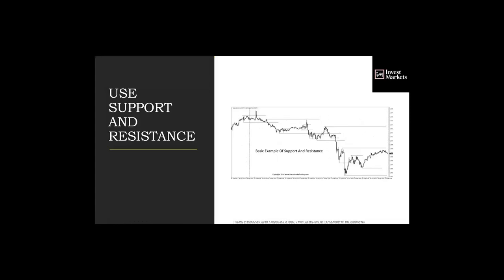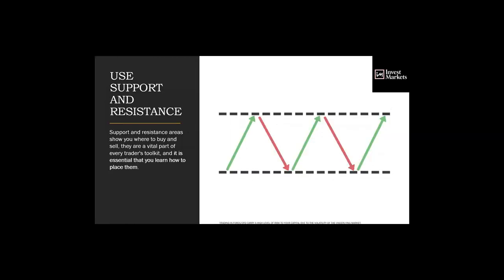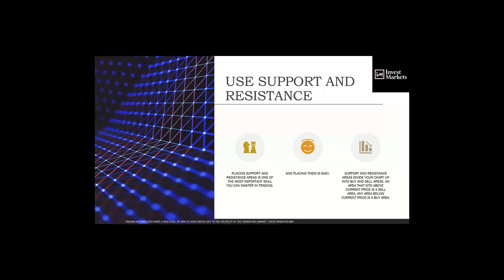Identifying these areas on your chart is crucial. Tonight's class is not about mastering support and resistance — we have whole one-hour classes teaching you all the different ways to get support and resistance, how to draw the lines, how to color-code them. Support and resistance areas show you where to buy or sell. They are a vital part of every trader's toolkit, and they are one of the key elements of the indecision candlestick trading strategy. Placing them is easy, though time-consuming.